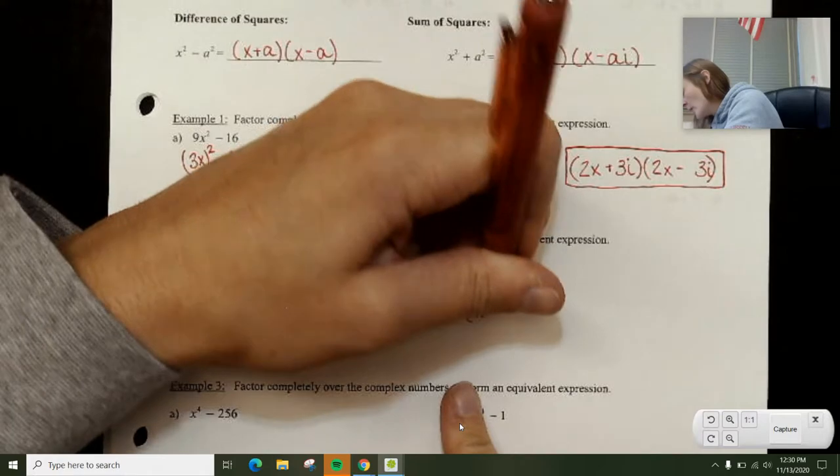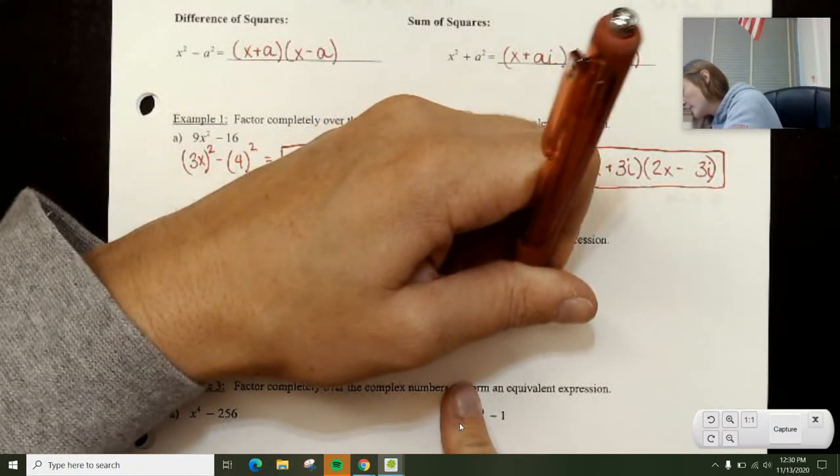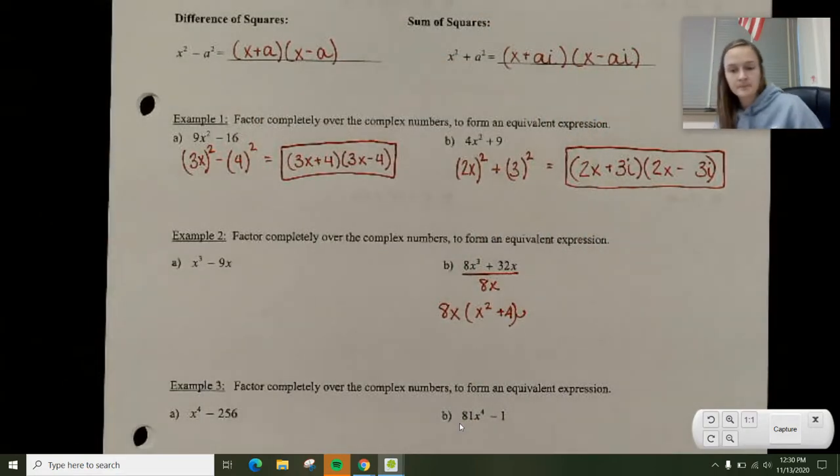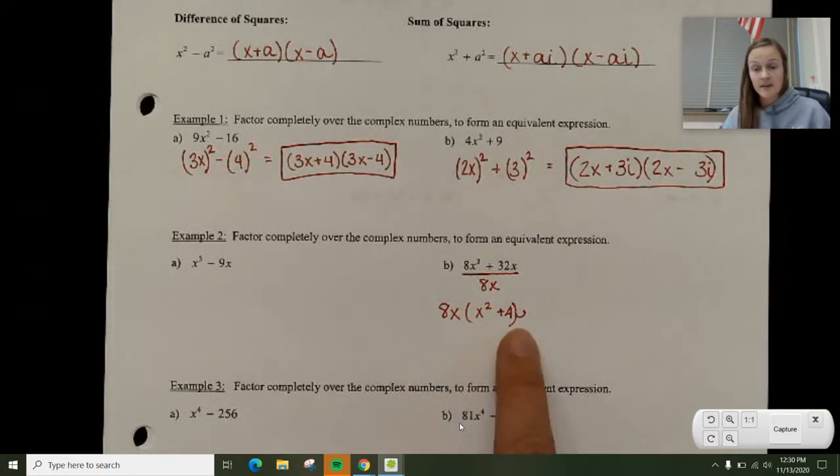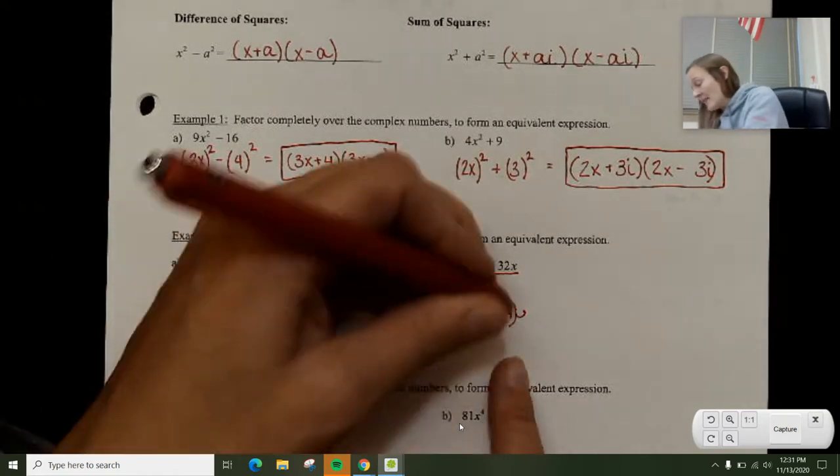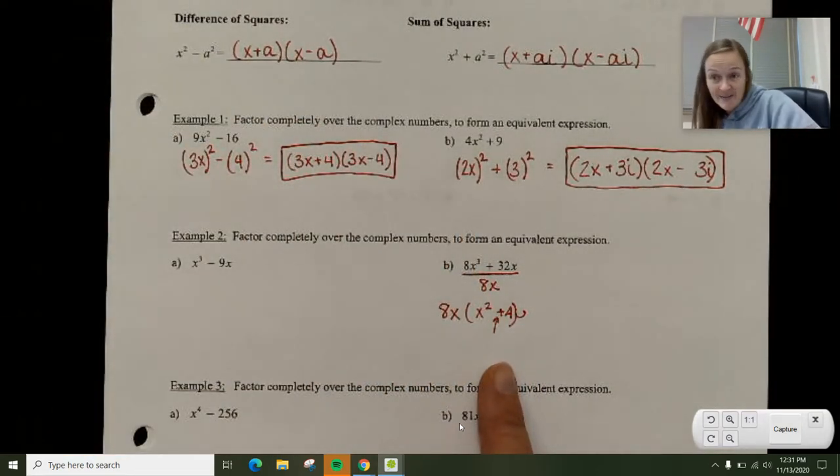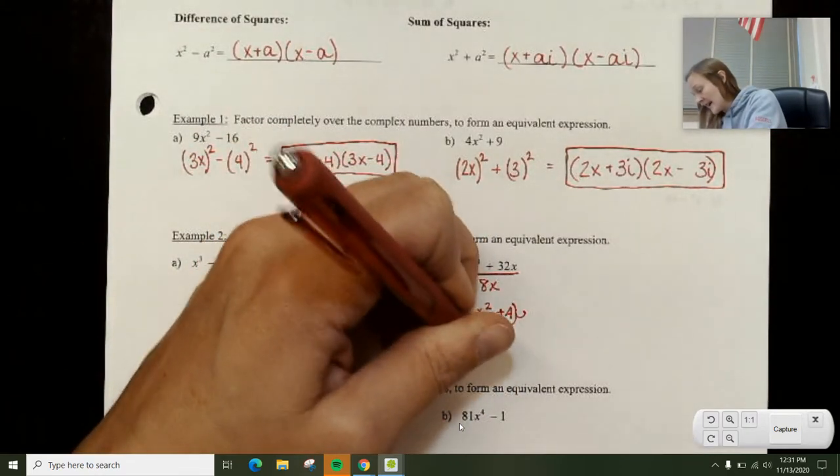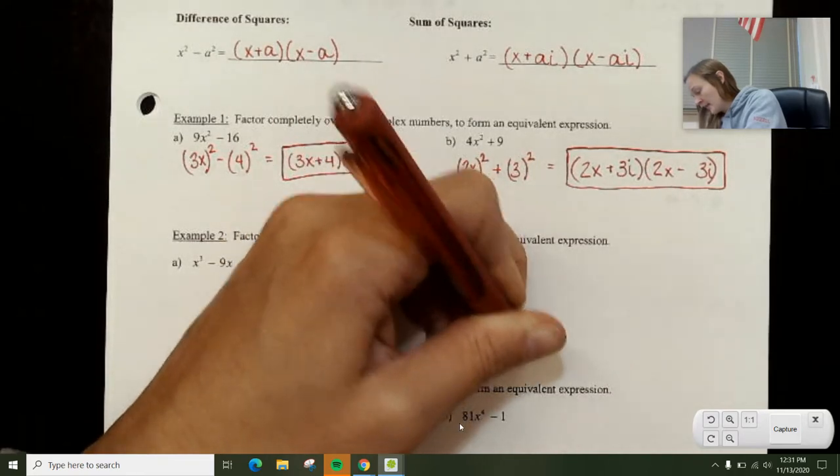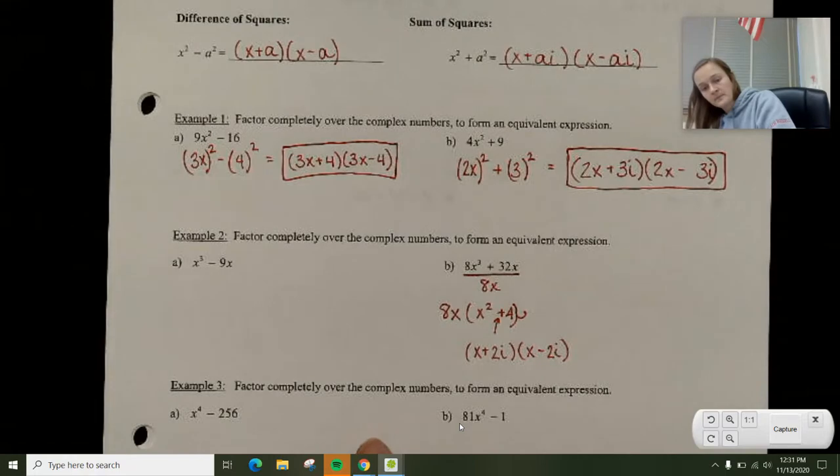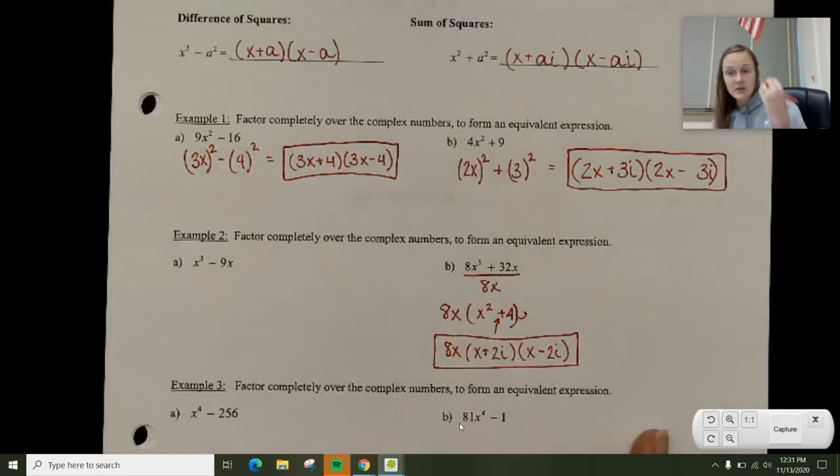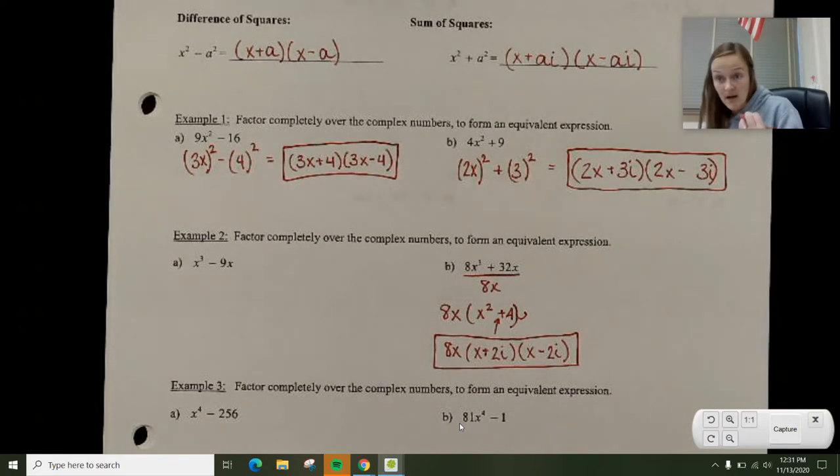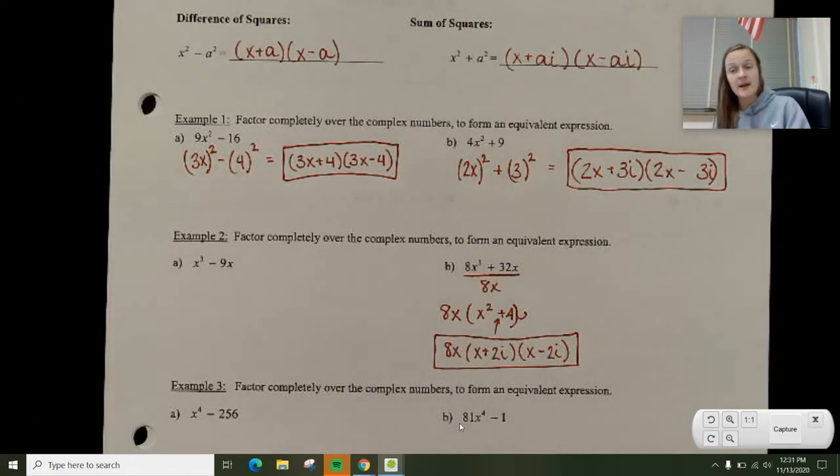When I take out 8x, I'm left with x² + 4. x² is a perfect square, it's x times x. 4 is a perfect square, it's 2 times 2. I have a plus sign here, which means I need i's in my answer. So this is going to factor into (x + 2i)(x - 2i). And then I put the 8x out in front. So this will be fully factored. I took out a GCF, I looked at what was left. What was left was a sum of squares, and then I factored that. Be very careful that you take out the full GCF when you do this.